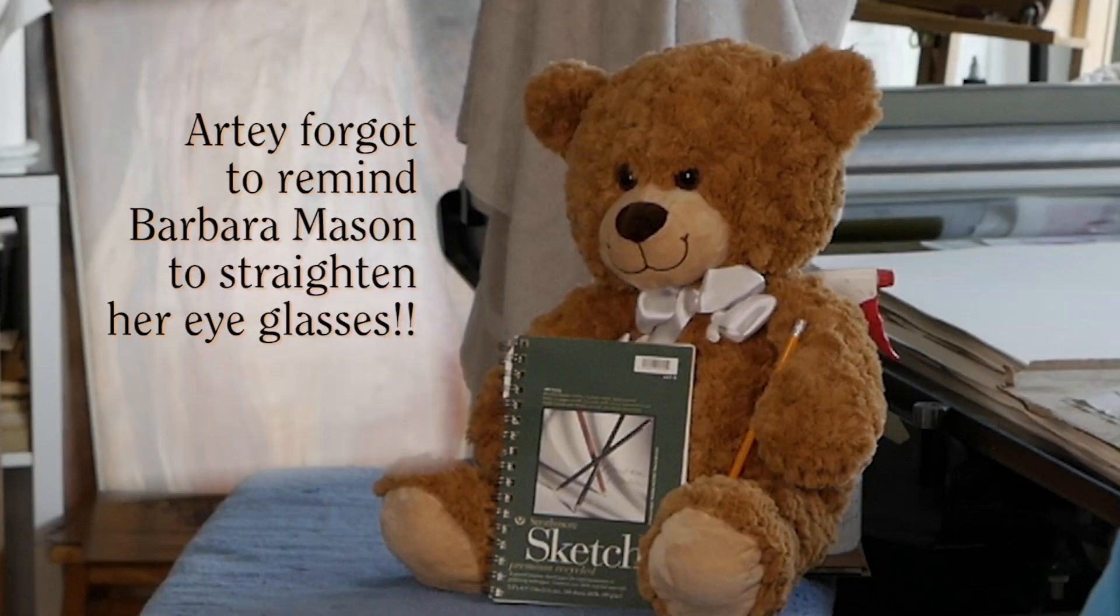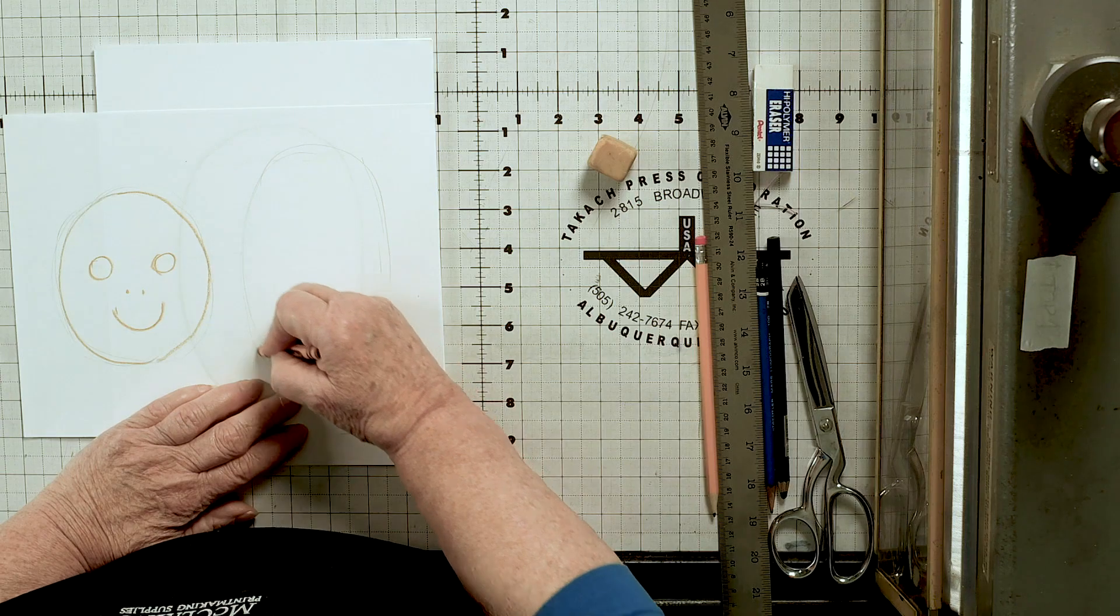You know, nobody's born knowing how to draw. Just like when you started school you didn't know how to read and you had to learn it. Drawing is the same thing. You have to learn how to do it. It's not magic. It's just if you do one thing and then you do another thing and you practice it, pretty soon you get pretty good at it. So the first thing we're going to do is instead of making a round face, we're going to make an oval.